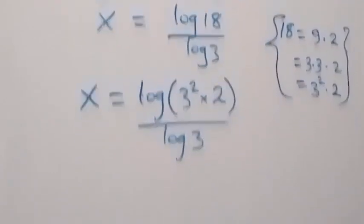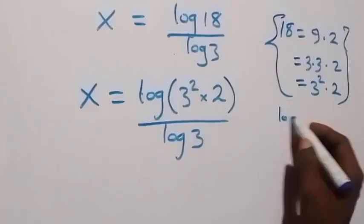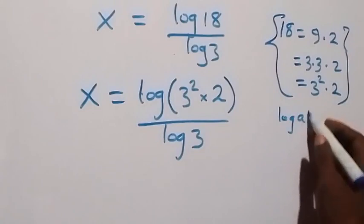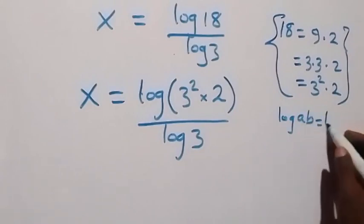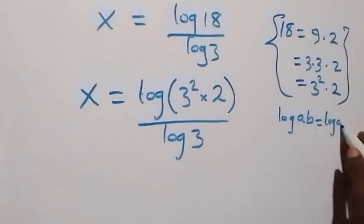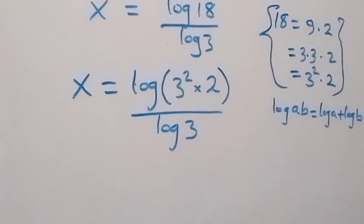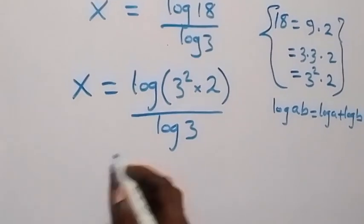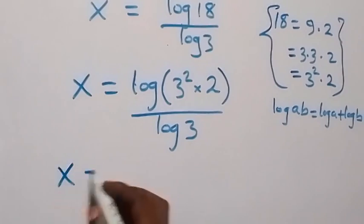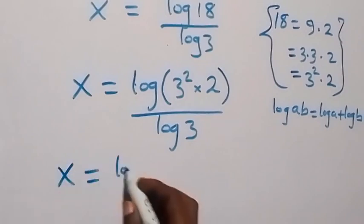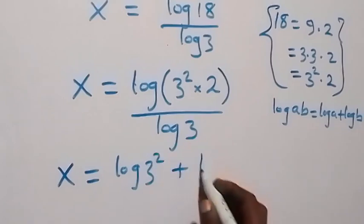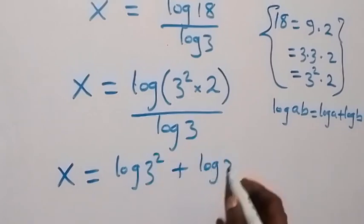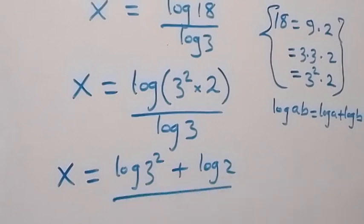Then from here, we have log(a times b). We can separate this as log a plus log b, from the product rule of logarithms. Then it means here we have x now equals to log 3 squared plus log 2, all over log 3.